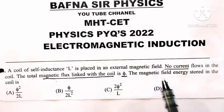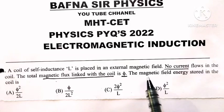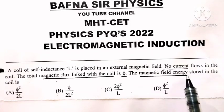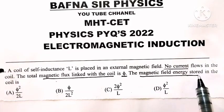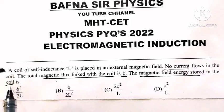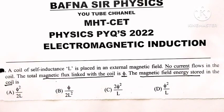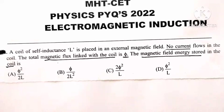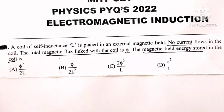The magnetic field energy stored in the coil is what we have to find. The magnetic field energy is half L I squared.